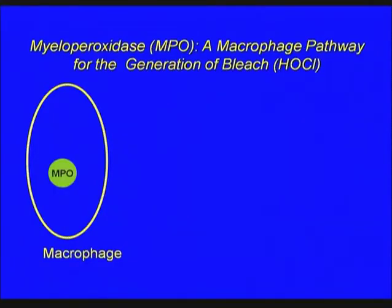One pathway that white blood cells like macrophages use to generate reactive intermediates involves an enzyme called myeloperoxidase, or MPO. I've colored it green here because this is a beautiful green protein. The first time I purified it, there was an intense green column of the protein bound to the column I was using for the isolation procedure, and as soon as I saw this protein, I knew I wanted to work on it.